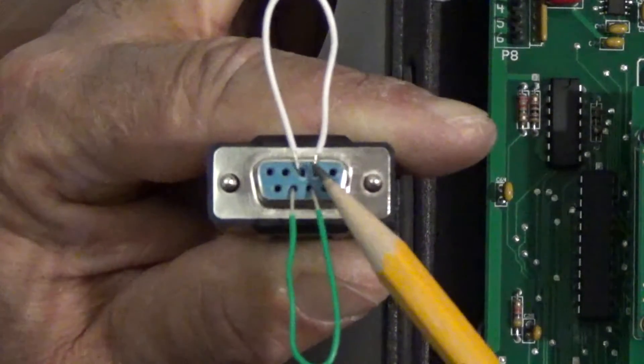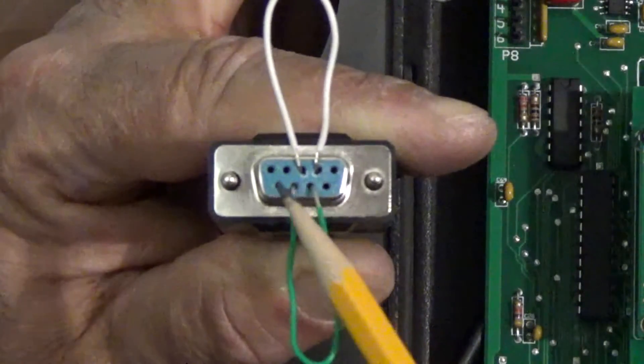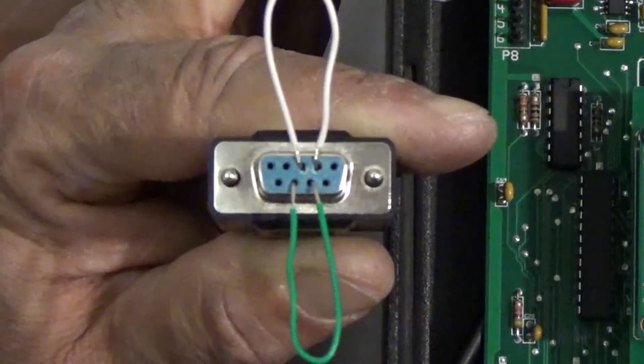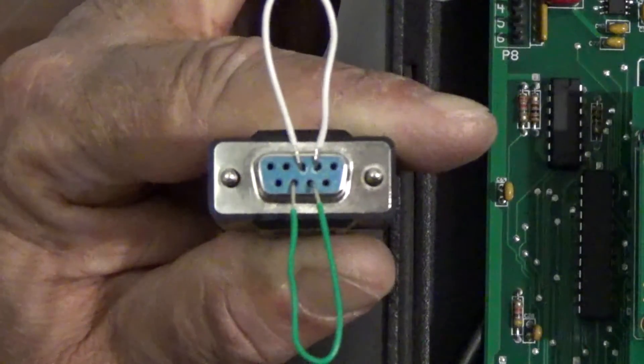We want to add a jumper to pinholes number two and three. Now the bottom row, the center two holes are seven and eight, and that's where we want to add our second jumper before our RS232 test on your serial cable.